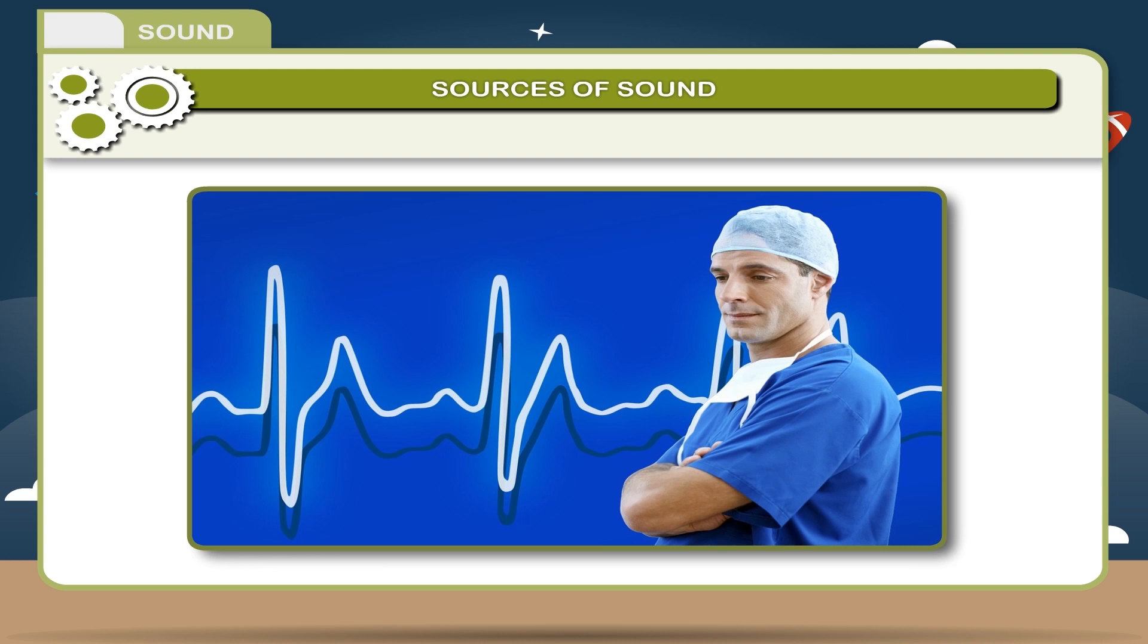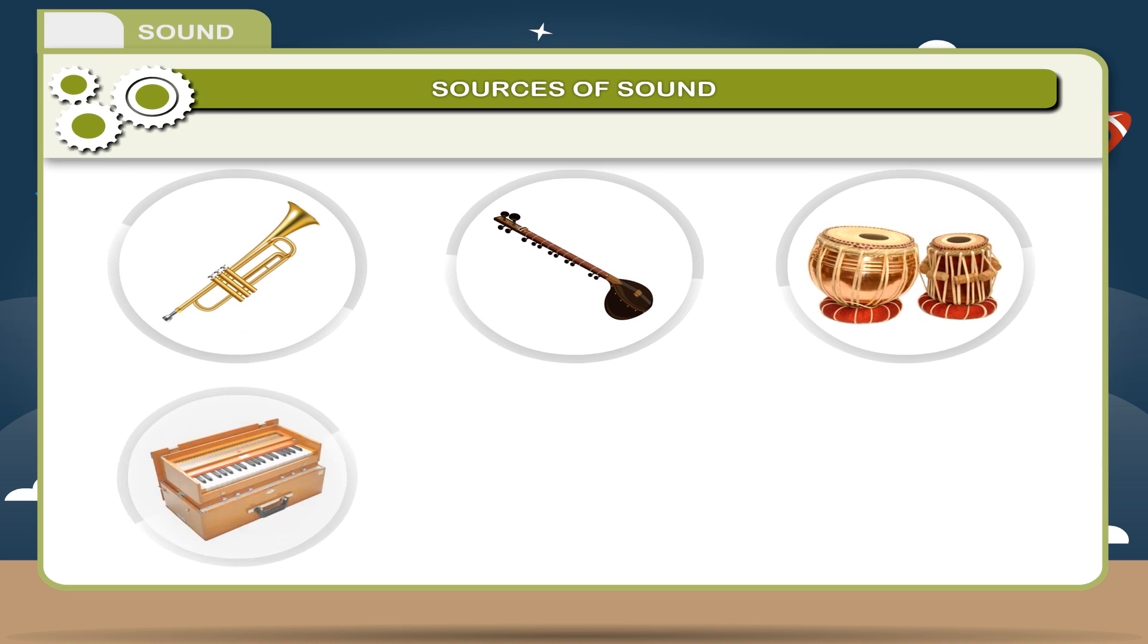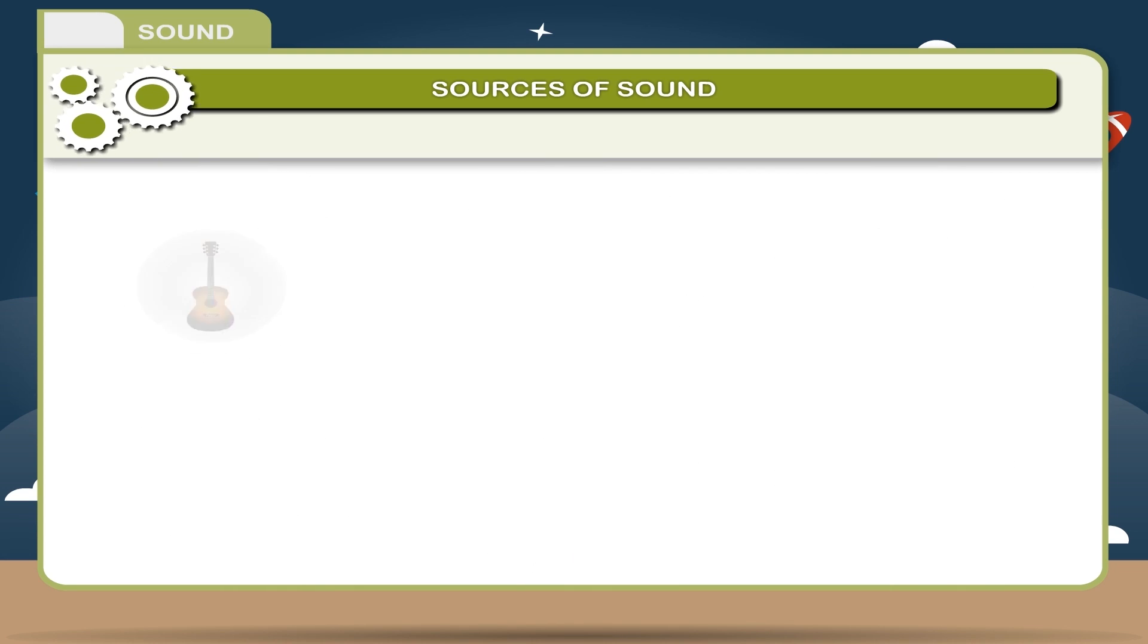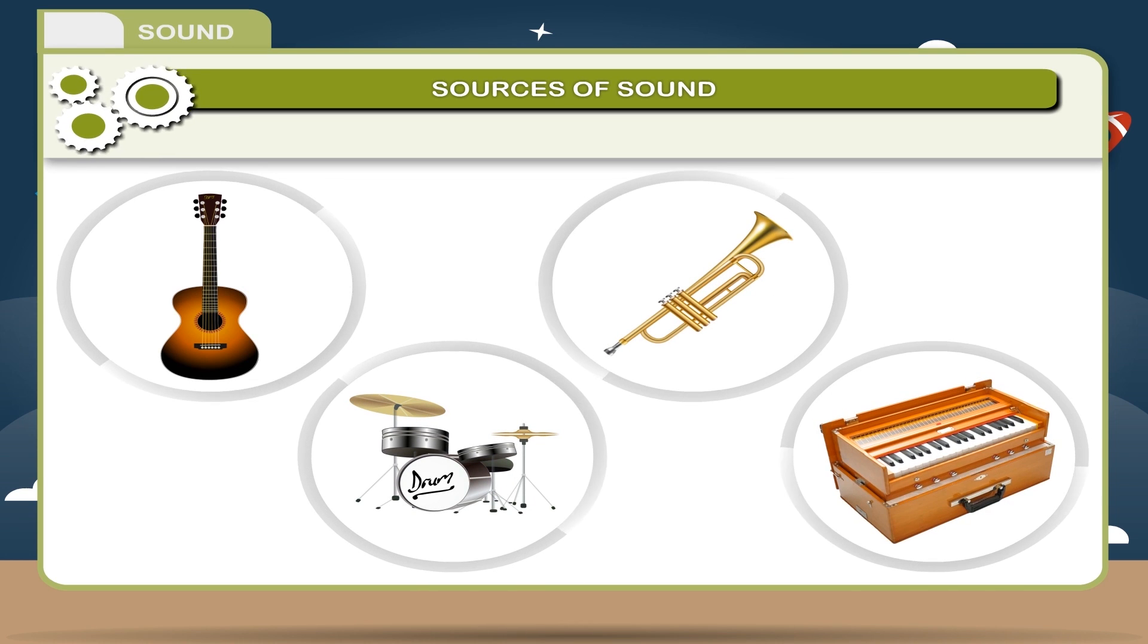Musical Instruments. There are various types of musical instruments which produce different sounds. They can be classified into four types: String Instruments, Percussion Instruments, Wind Instruments, and Reed Instruments. They all produce sound but in different ways.